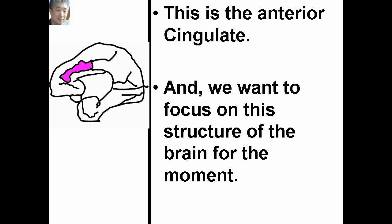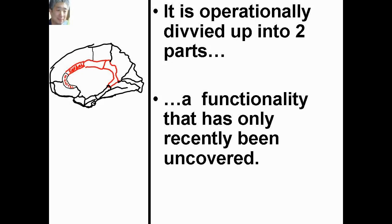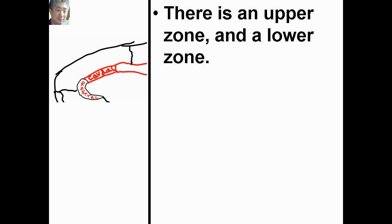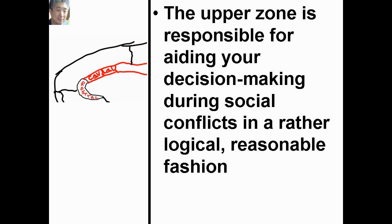This is the anterior cingulate, and we want to focus on the structure of the brain for the moment. It is operationally developed into two parts, a functionality that has only recently been uncovered. We are now certain that the anterior cingulate is divided into two separate zones of functionality. There is an upper zone and a lower zone. The upper zone is responsible for aiding your decision-making during social conflicts in a rather logical, reasonable fashion.